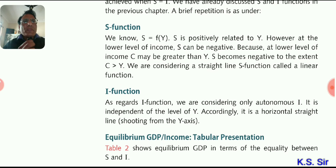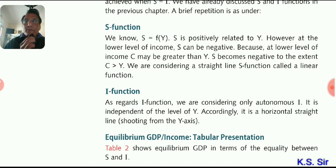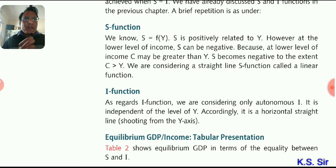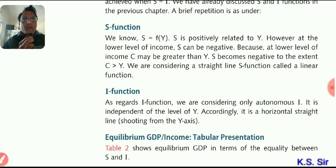First, the saving function. We know S is equal to F(Y) — saving is a function of Y. Our saving depends on our income, so S is positively related to Y. As your income increases, your saving will also increase. However, at a lower level of income, S can be negative. When your income is so low that it is below your consumption, that is a case of negative saving. Even when income is zero, consumption is not zero — that minimum autonomous consumption represents negative saving. So S becomes negative to the extent that C exceeds Y. We are considering a linear S function — a straight line.